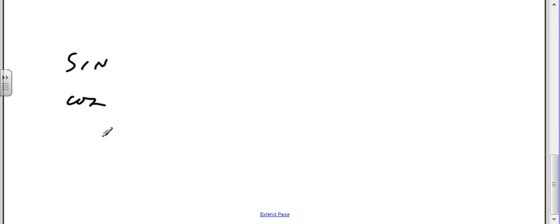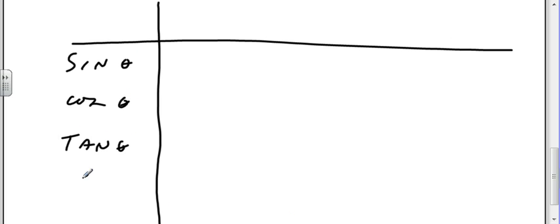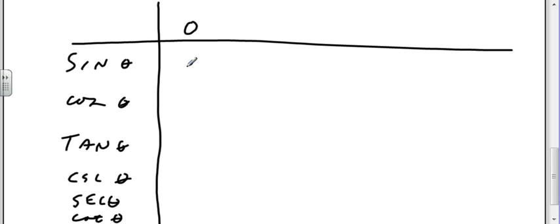We'll use a chart for sine, cosine, and tangent theta. At zero degrees: sine is zero, cosine is one, tangent is zero. Cosecant is undefined because I'm dividing by zero. Secant is going to be one. And the cotangent is going to be undefined because I'm dividing by zero.